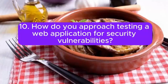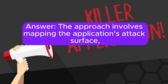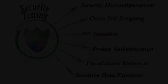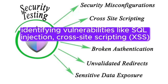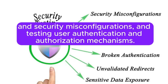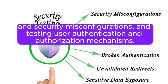Question 10: How do you approach testing a web application for security vulnerabilities? Answer: The approach involves mapping the application's attack surface, identifying vulnerabilities like SQL injection, cross-site scripting (XSS), and security misconfigurations, and testing user authentication and authorization mechanisms.